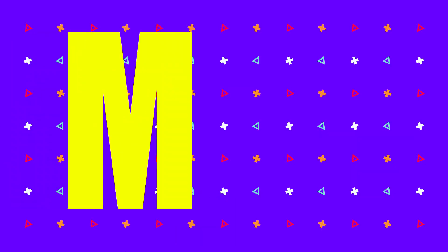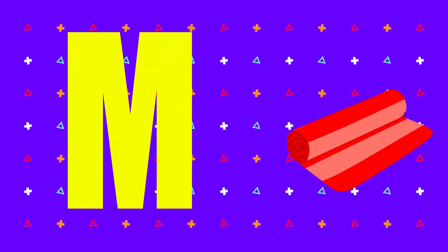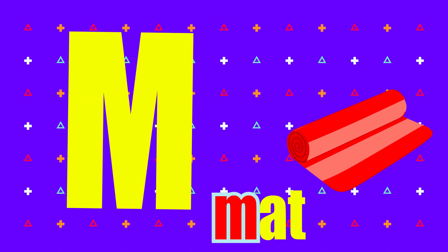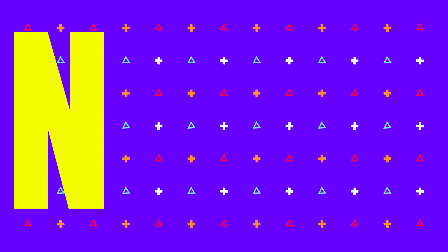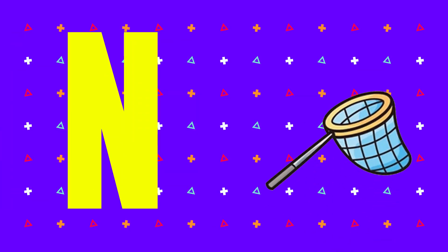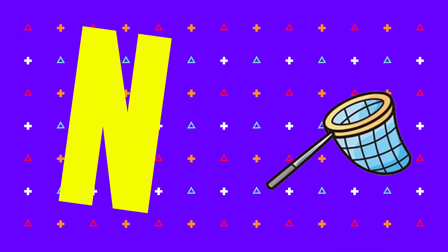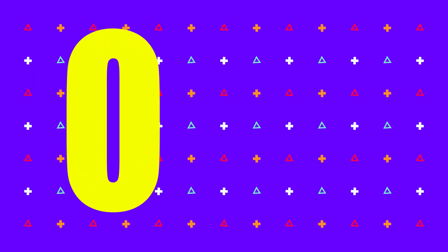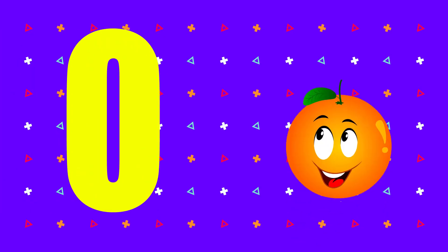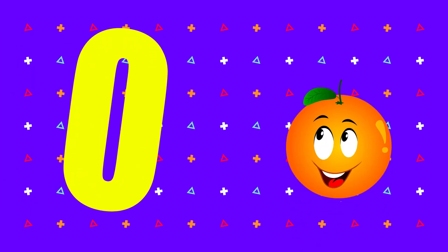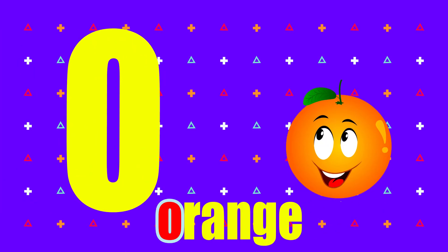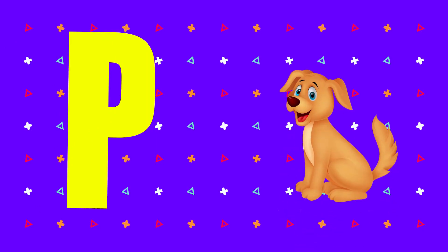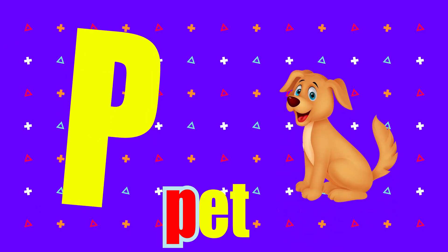M is for mat, m-m-mat. N is for net, n-n-net. O is for orange, o-o-orange. P is for pet, p-p-pet.